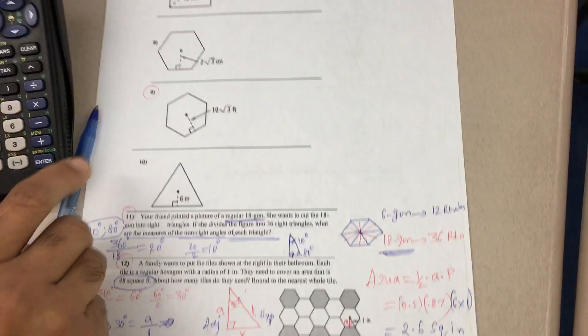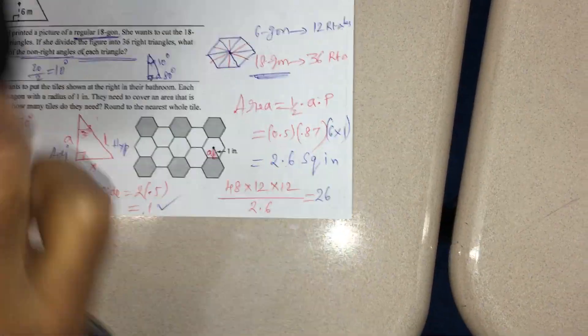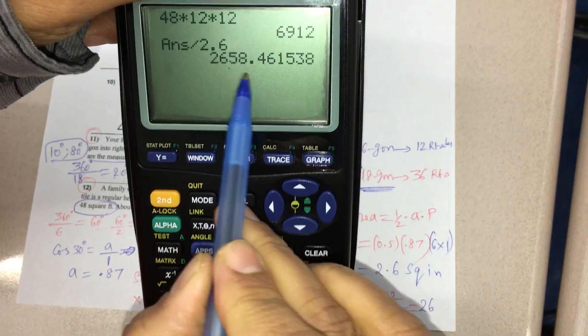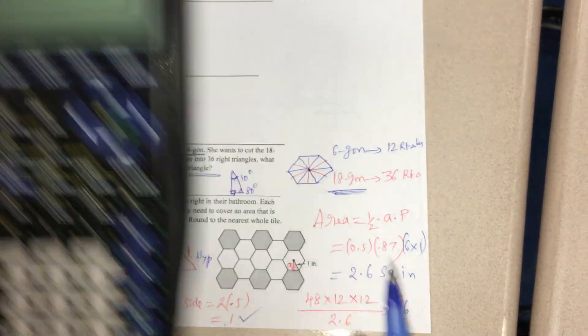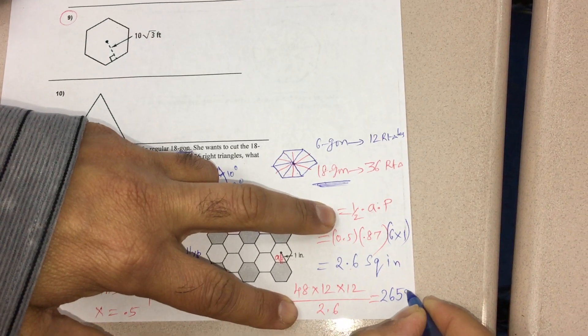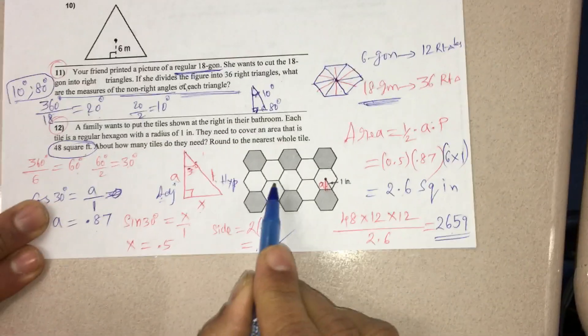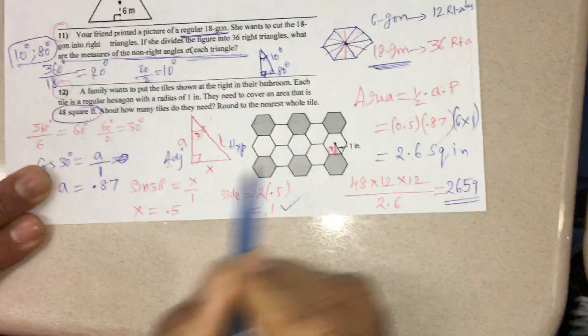So 2,658.4. I am rounding to the next number, which is 2,659 tiles required to spread in the bathroom with these shapes. Thank you.